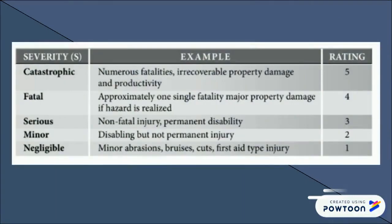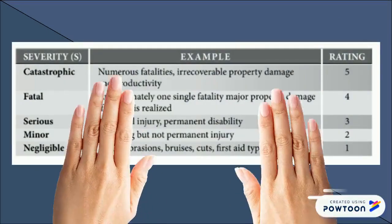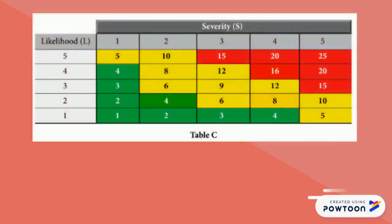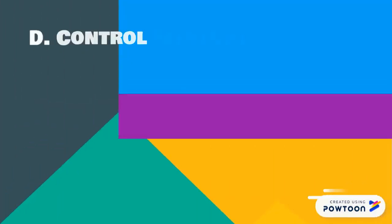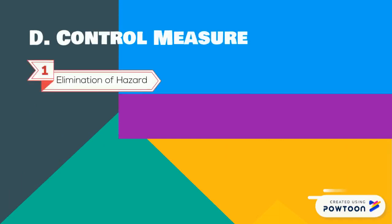There are also 5 categories for severity of hazard. The result of risk analysis can be presented using a risk matrix, where the red colour region indicates high risk, yellow for medium risk, and green for low risk.